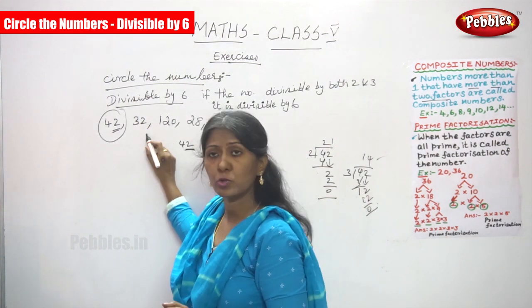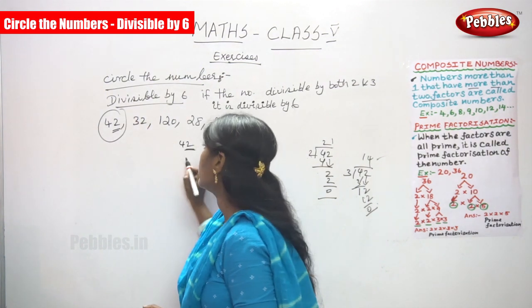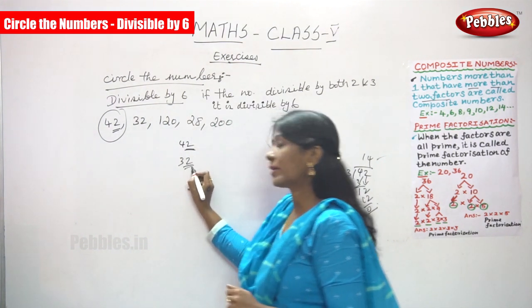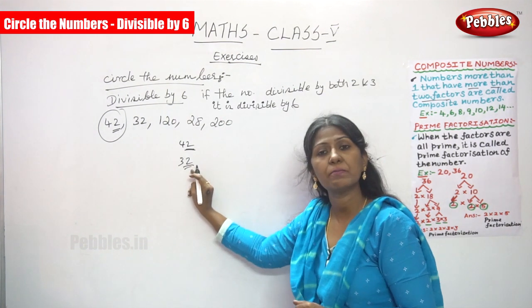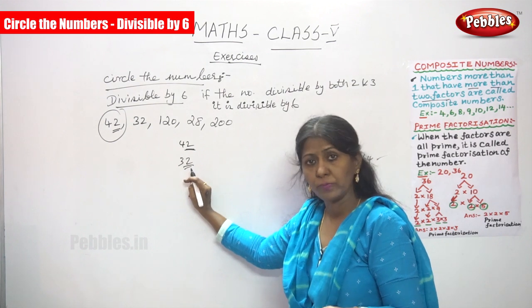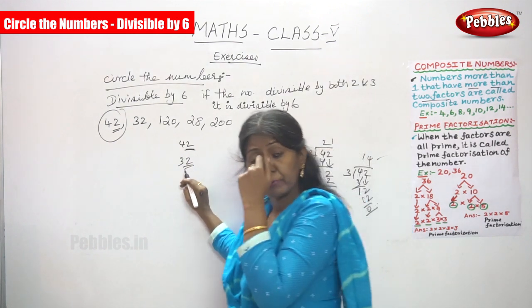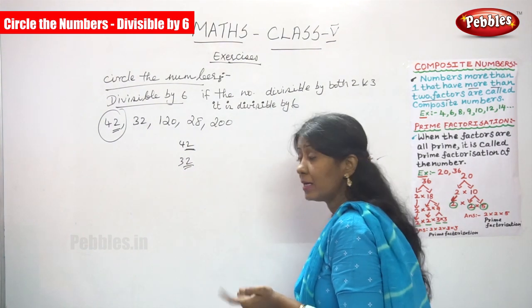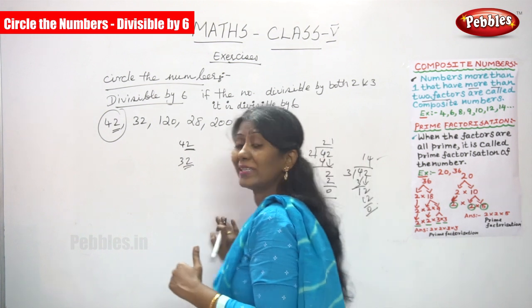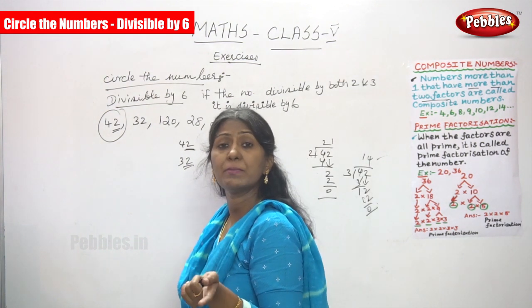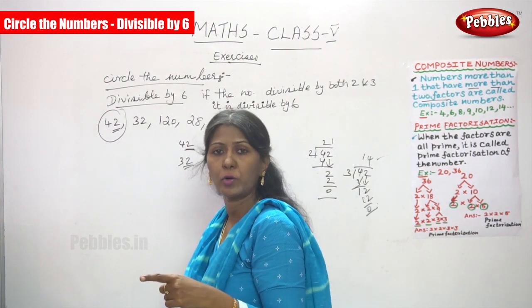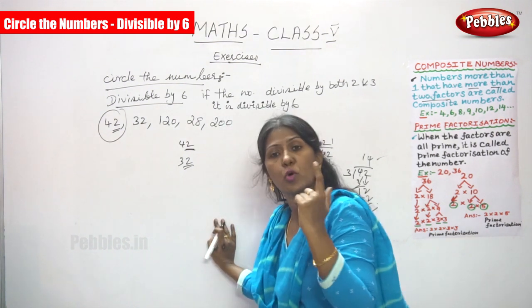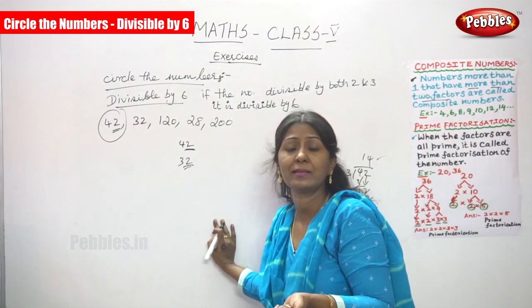Next is 32. It ends with 2, so it is automatically divisible by 2. Now we check: is 32 divisible by 3? It is not divisible by 3.